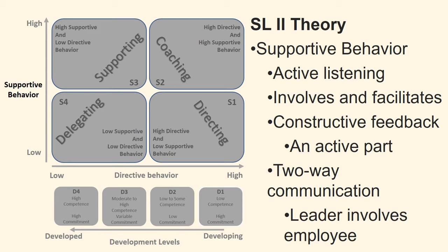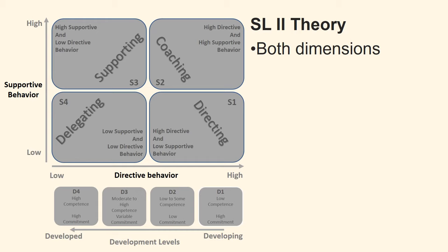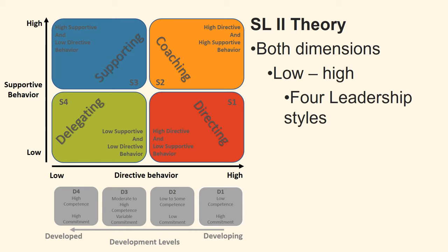In supportive behavior, the leader takes on a different role. The leader supports, performs active listening, involves and facilitates the employee to make decisions himself, and provides constructive feedback. The leader helps the employee to become an active part in the decision-making process. This is a two-way communication where the leader involves the employee. Both dimensions go from low to high, and this two-by-two matrix contains four leadership styles.